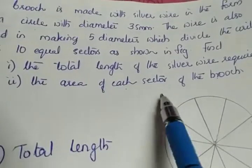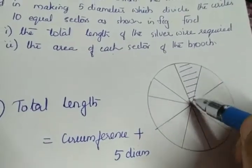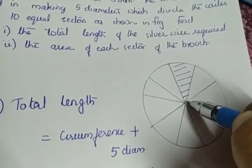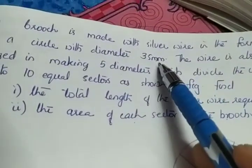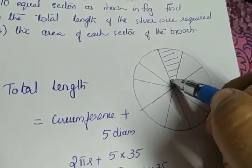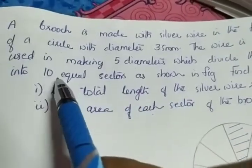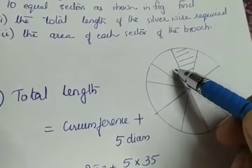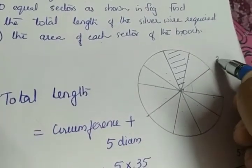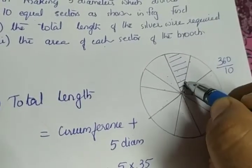The second part is: area of each sector of the brooch. To find the area of the sector we need radius and theta. Radius is 35/2 since diameter is 35 mm. For theta: the full angle is 360°, divided into 10 equal parts since there are 5 diameters making 10 equal sectors. So each angle is 360 ÷ 10 = 36 degrees.